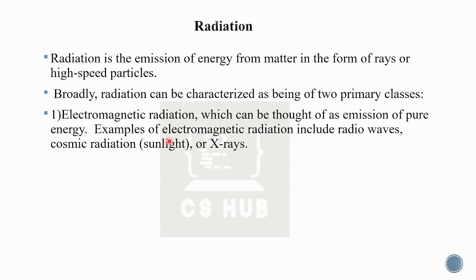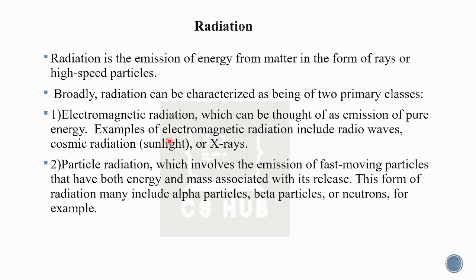Electromagnetic radiation includes radio waves, cosmic radiation, and x-rays. The second class is particle radiation, which involves fast-moving particles from matter. Electromagnetic radiation is pure energy, but particle radiation involves both energy and mass associated with its release.